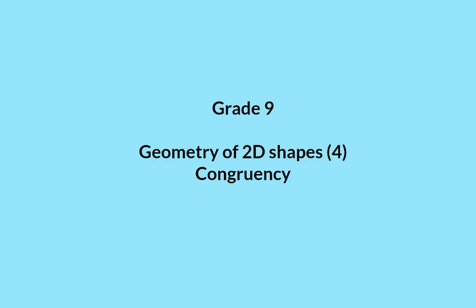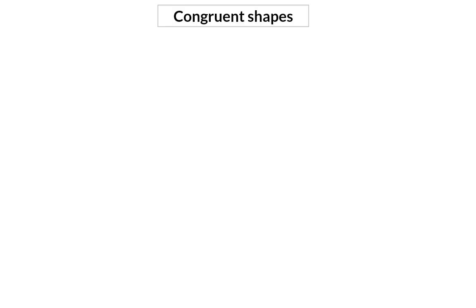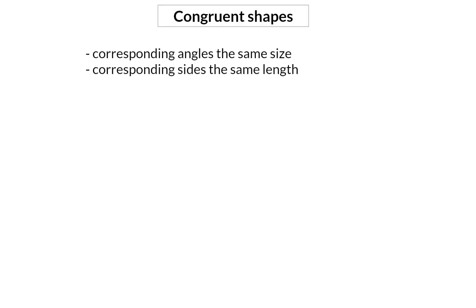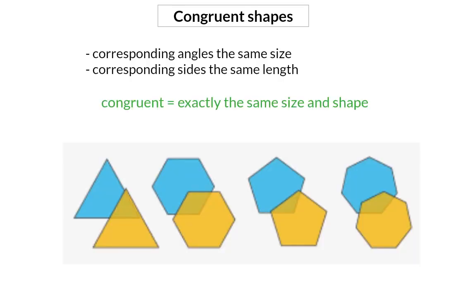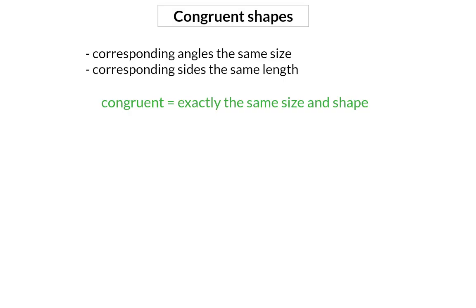In this video, we're going to have an in-depth look at congruency of triangles. Shapes of which the corresponding angles are the same size and the corresponding sides the same length are called congruent shapes. These figures then have exactly the same size and shape and can fit on each other. For congruency, we make use of the symbol of three equal lines, and in grade 9 we specifically focus on congruent triangles.